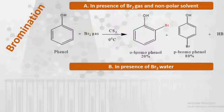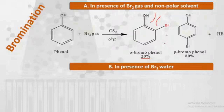Looking at the product distribution: orthobromophenol is 20% and is the minor product, because the ortho position leads to steric hindrance between the two electronegative groups OH and Br. Due to repulsion between these electronegative groups, the ortho product is minor, while parabromophenol is the major product in this reaction.